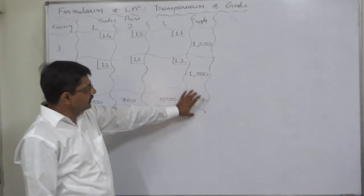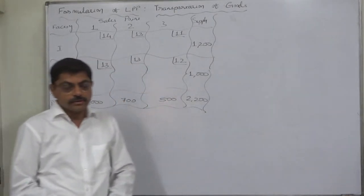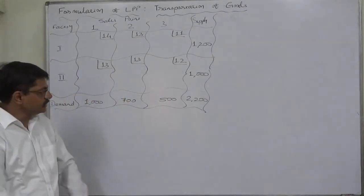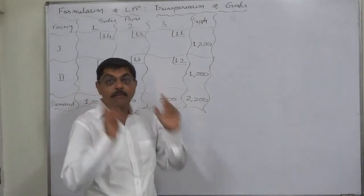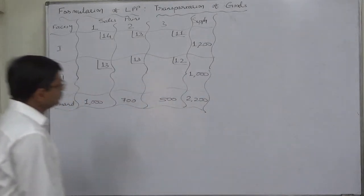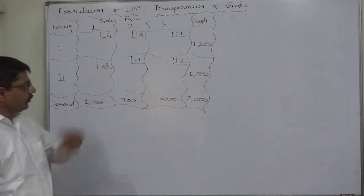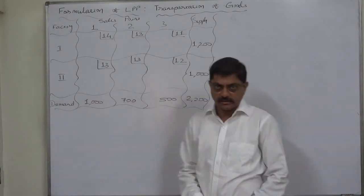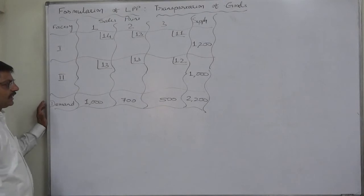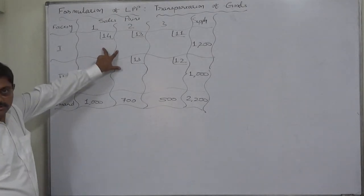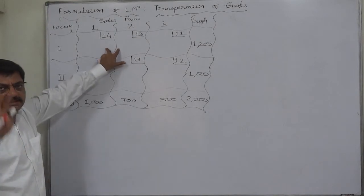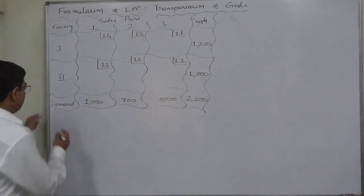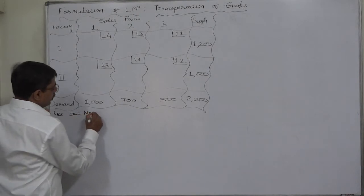We need to formulate this as an LPP. Since this is a transportation problem with cost data and we need to transport a certain number of units daily, naturally the objective must be minimization — we want to minimize total transportation cost. To have an objective function and constraints, we need to define decision variables. We have decided to take only two decision variables.